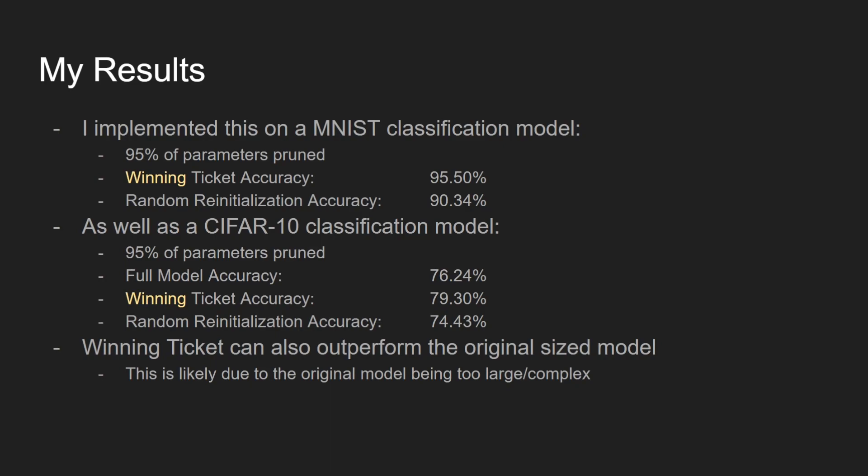I also implemented the algorithm on a CIFAR-10 classification model, which is a model that classifies small images into 10 different classes. The full, unpruned model achieved 76.24% accuracy, while the winning ticket achieved 79.3%. The fact that the winning ticket outperformed the unpruned model was surprising. The authors of the paper showed a similar phenomenon, speculating that the full model might have too much capacity, whereas the winning ticket models generalize better.